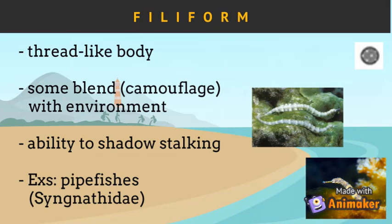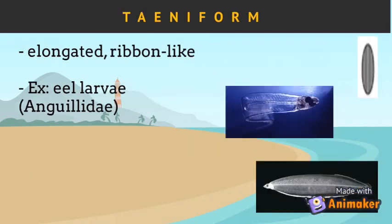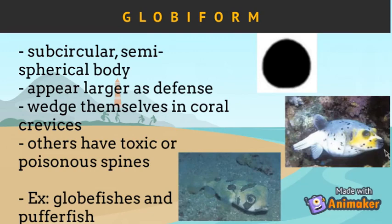Pipefishes of the family Syngnathidae are examples of fish which exhibit the filiform body form. The next body shape is the taeniform. Taeniform fish have an elongated and ribbon-like body shape. They are exhibited by the elvers and larvae of the family Anguillidae.